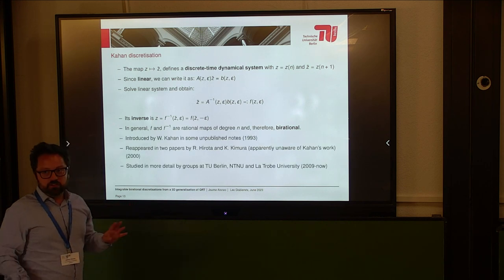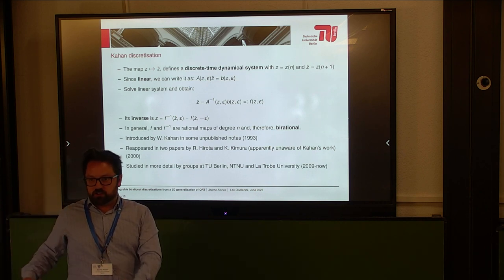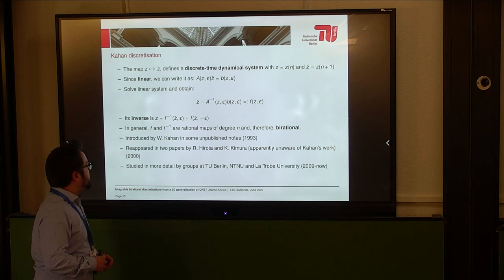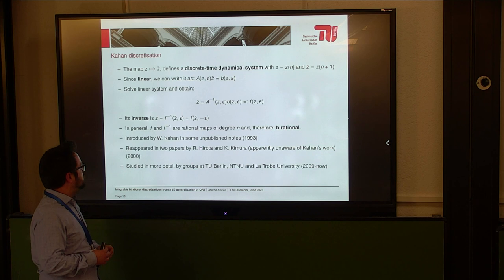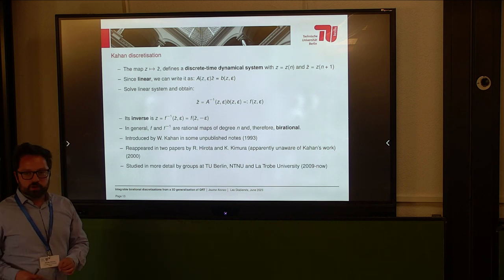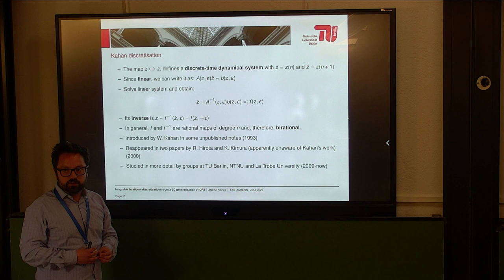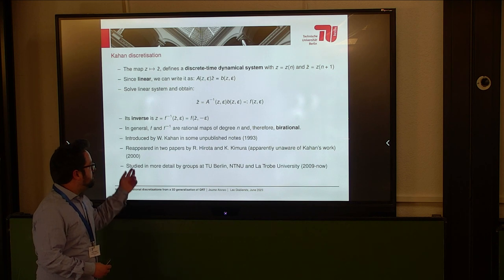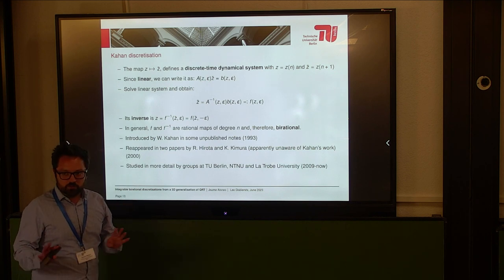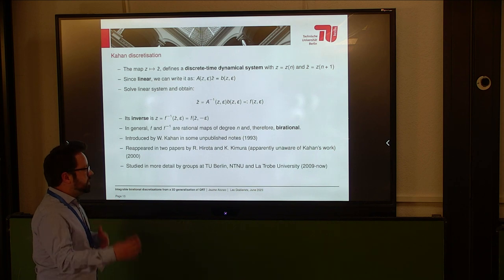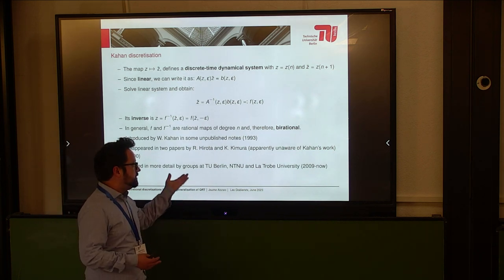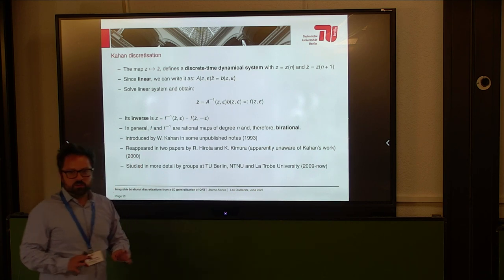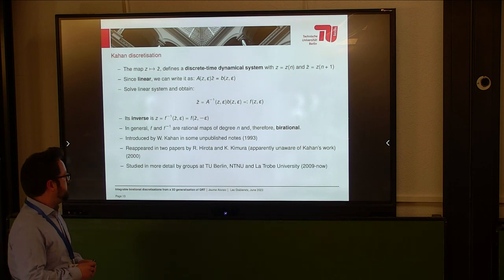This method was actually introduced in some unpublished notes, as a curiosity but not part of the main lecture. Then Hirotan Kimura, apparently unaware of Kahan's work, wrote two papers showing the very surprising properties of this method — and here is where the method became famous, in the year 2000. One paper was about the Euler top, the other about the Lagrange top. It got picked up in a few groups, like TU Berlin where I am now, also in Norway, Melbourne, and other universities in Australia and New Zealand.